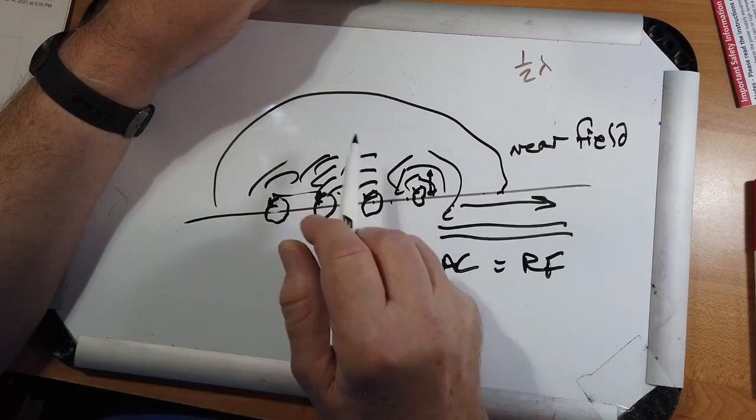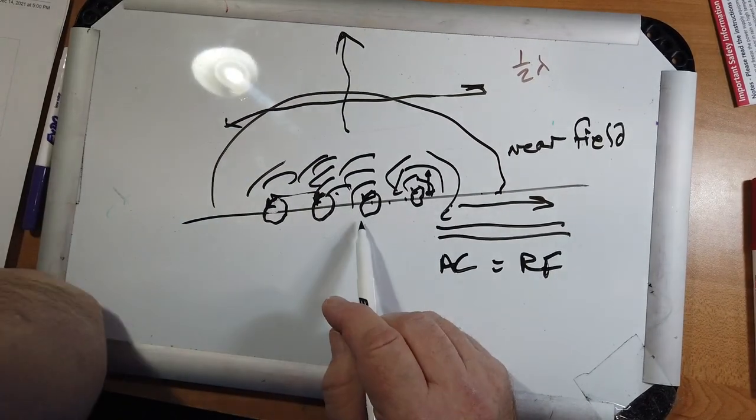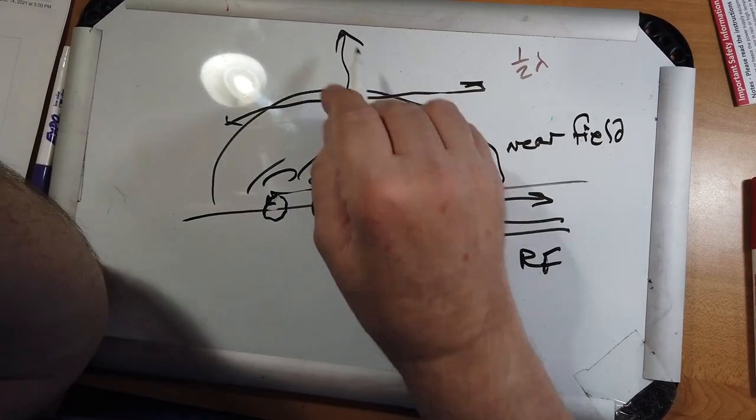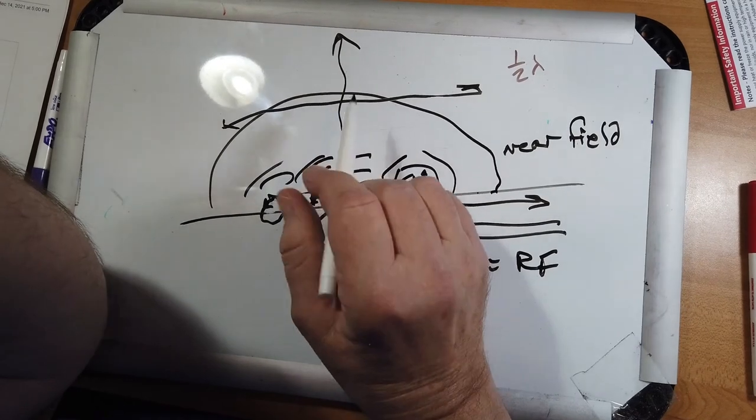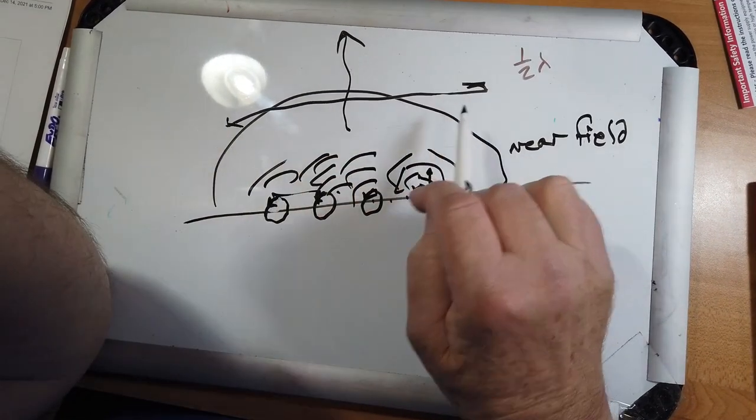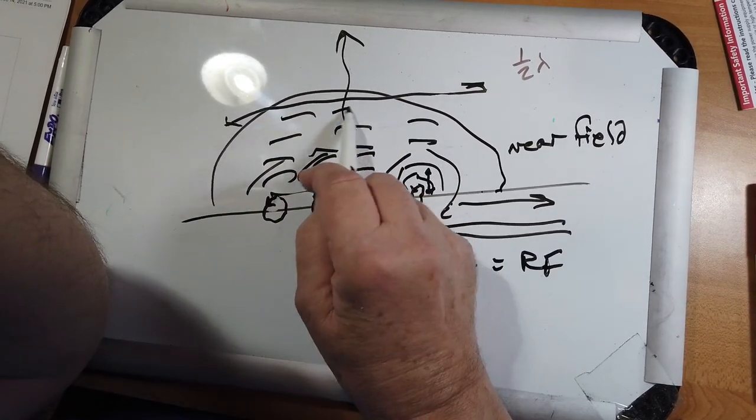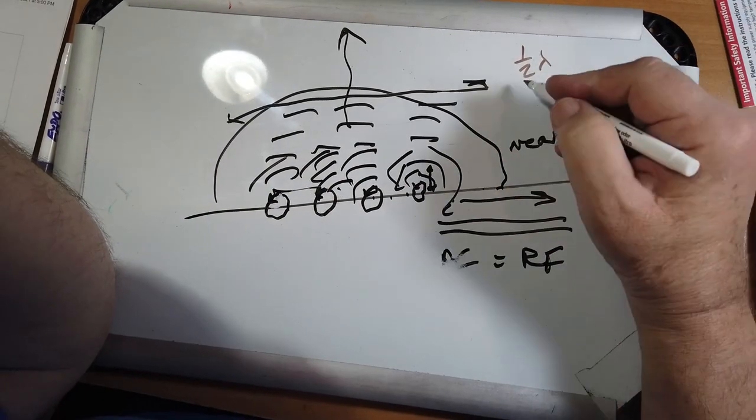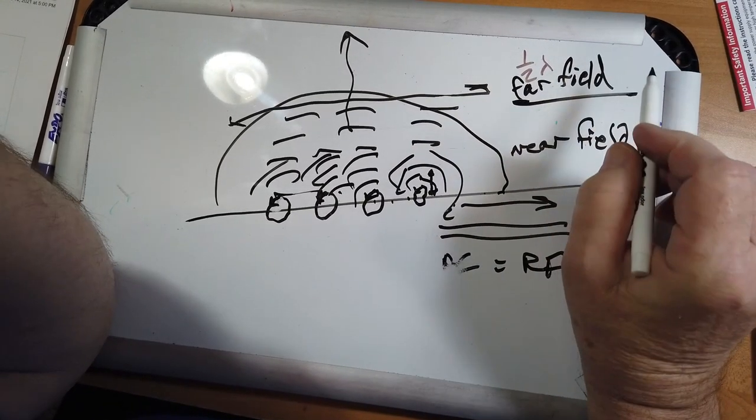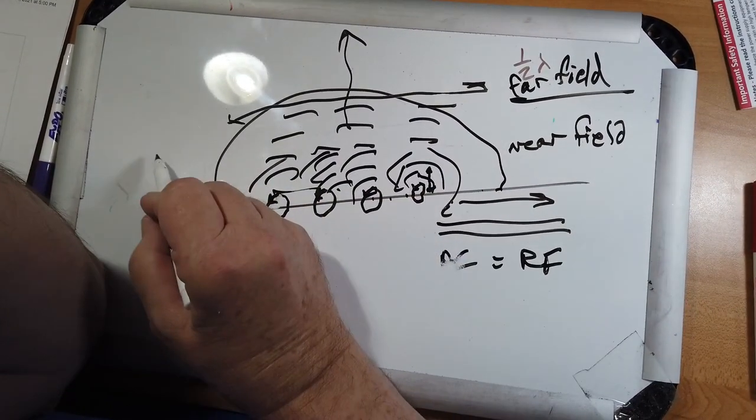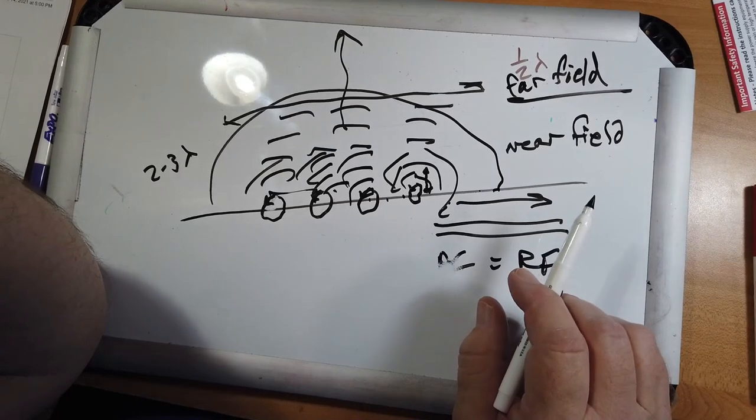The far field is where these start to add together, and you get a wave front that's propagating this way. Now these waves are transverse waves. They're not compression waves like sound. They're transverse waves. And you get a wave, which is actually a summation of all these points.